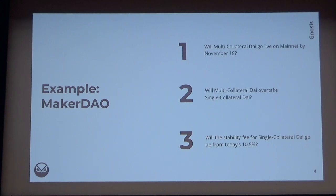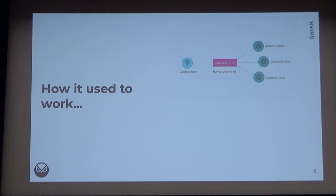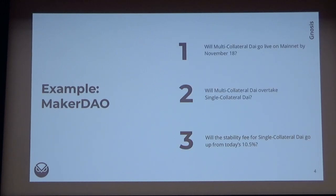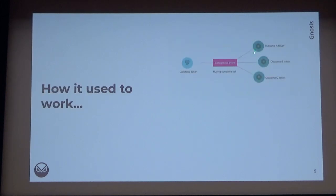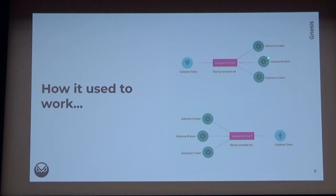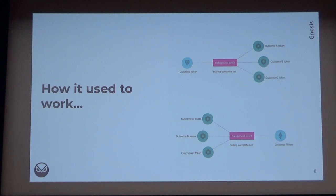We've just put out a new framework for this. In the old framework, you had a collateral token — say ETH or DAI — and you'd put it into an event contract, which would have multiple outcomes: yes/no, or A, B, C. You could buy a complete set, trade each outcome individually, convert a full outcome set back into a collateral token, or wait until the event resolves. One outcome pays out one, the rest pay out zero. There's also a scalar flavor where outcomes pay out somewhere between zero and one.